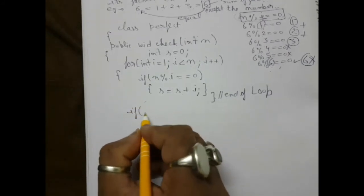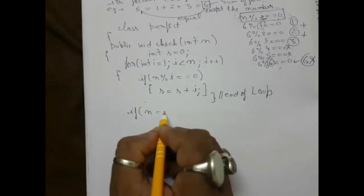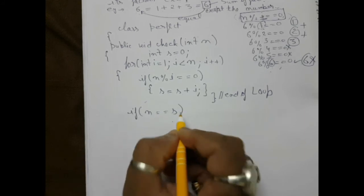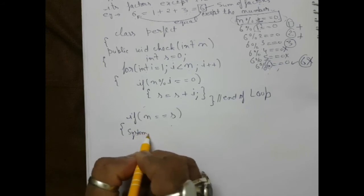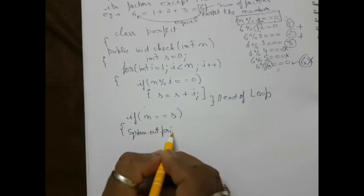We close the if block here. Else, we write system dot out dot println n, n is not a perfect number.